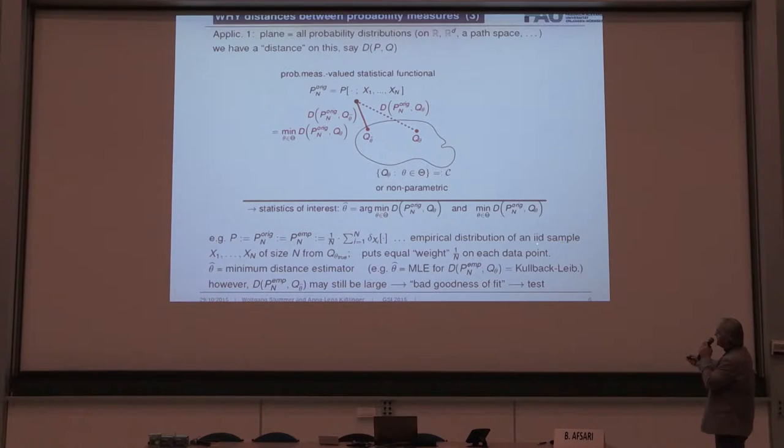For instance, take an IID sample, then you just have the empirical distribution here. So you put weight 1 over n to each data point, and then you want to find the distribution which is closest. So actually, you have all done this, maybe without knowing, because if you take as a distance the Kullback-Leibler information divergence or the relative entropy, then you end up that the minimum distance estimator is nothing else but the maximum likelihood estimator. So maximum likelihood estimation is always a special case, a special, special, special case of our context.